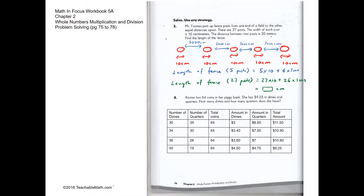Question 3. Mr. Thomas puts up fence posts from one end to another, equal distance apart. There are 27 posts; the width of each post is 10 centimeters and the distance between two posts is 30 meters. We have to be careful about the units — over here centimeters, over here meters. So we're going to convert 30 meters to centimeters: 30 meters would be 3000 centimeters.